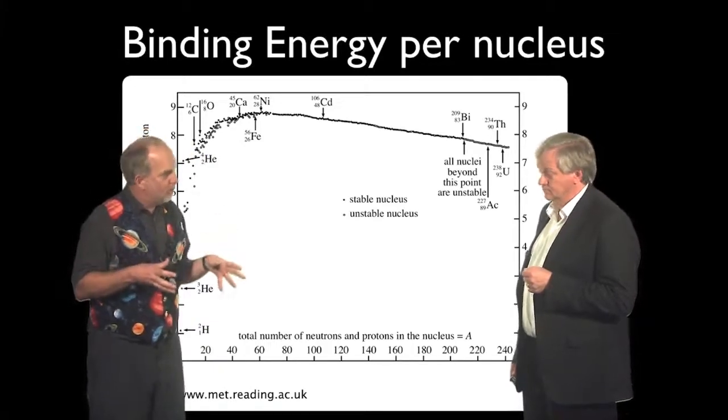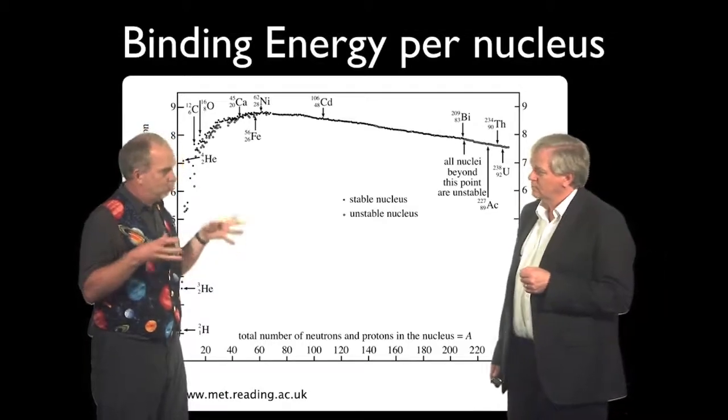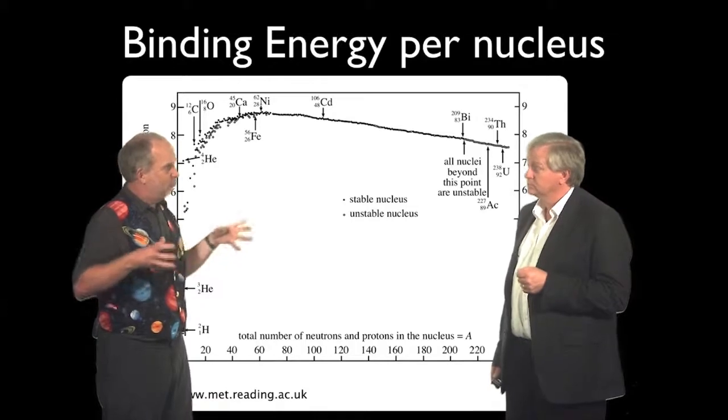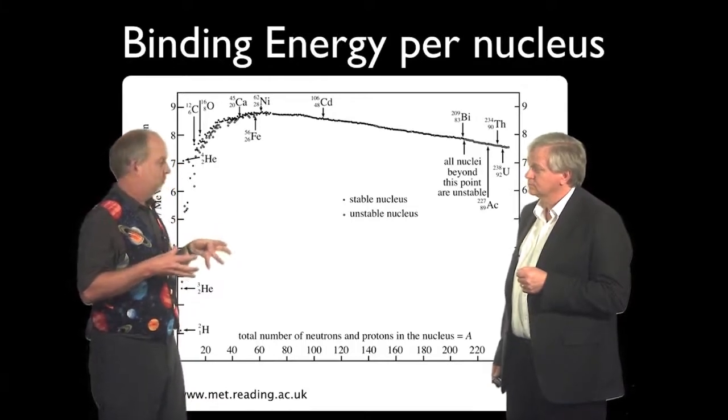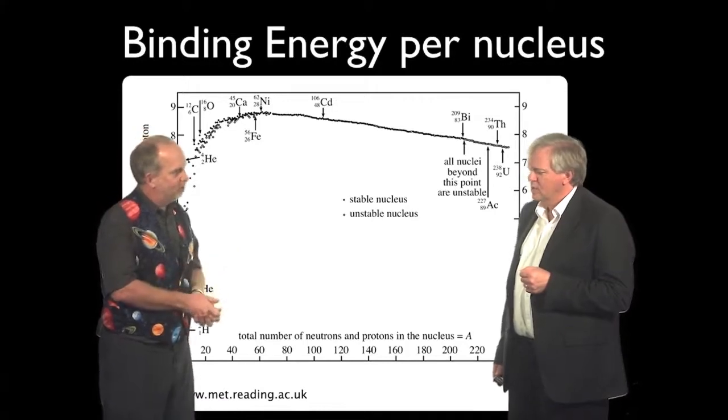And as we saw earlier, there's an upper limit to how big a white dwarf can be, set by the Chandrasekhar limit. If you're too massive, the electrons have to be going faster than the speed of light to be able to resist the pressure. So surely that's it, game over. It just keeps on shrinking and shrinking and shrinking until it forms a black hole.